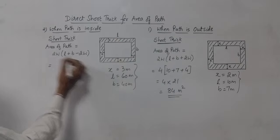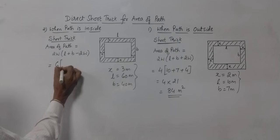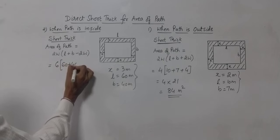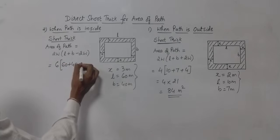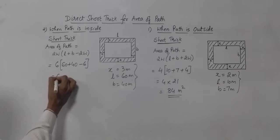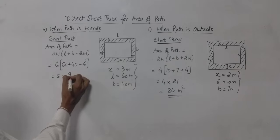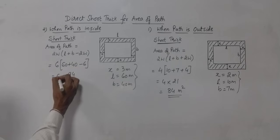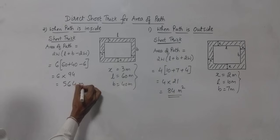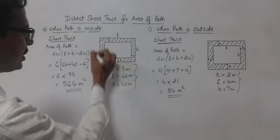Now what happens when the rectangular park is 60 meters by 40 meters and the path is inside the park. So here twice the width is 6, length is 60, breadth is 40 and again you need to subtract twice the width, that is 6. So this will be 6 multiplied by 100 minus 6 which is 94, and 6 times 94 is 564. So 564 square meters will be the area of this shaded portion.